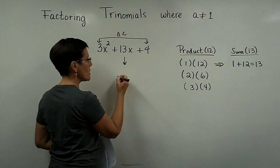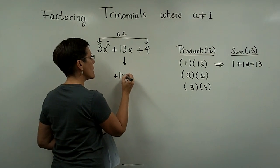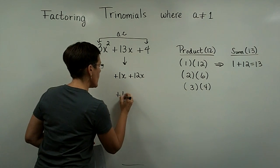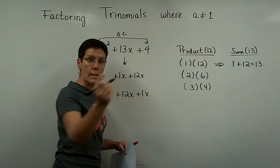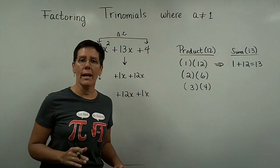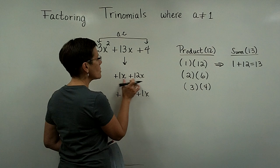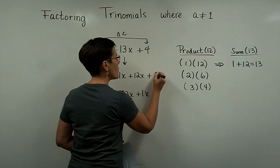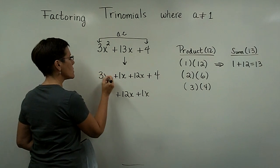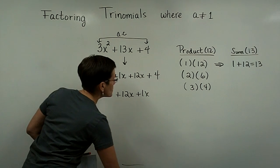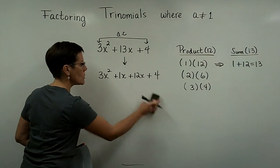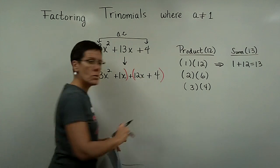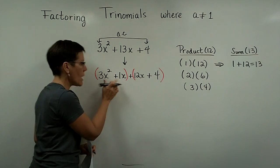I can replace 13x with 1x and 12x, because that adds to be 13x. Or I can write it as 12x and 1x — it will work either way, I promise. In this particular case, it looks nice to put the 12x in the back to go with the 4, and put the 3x squared in front. So I now have 4 terms to work with, though again, I could have used the other order.